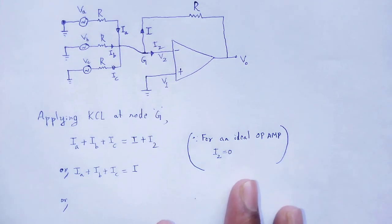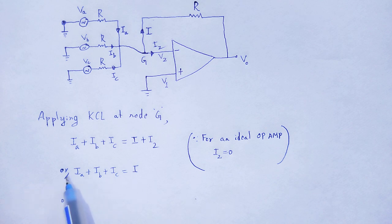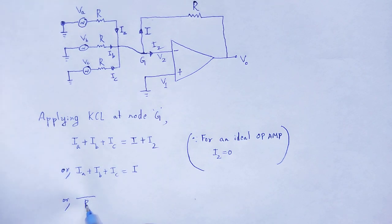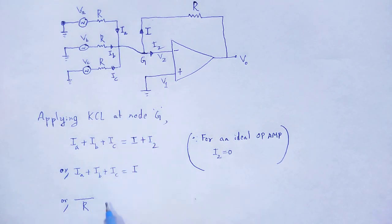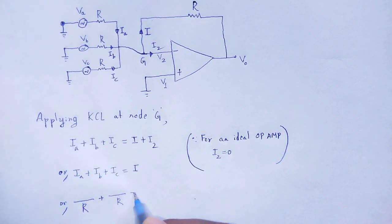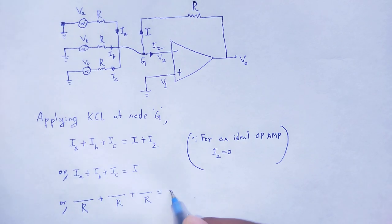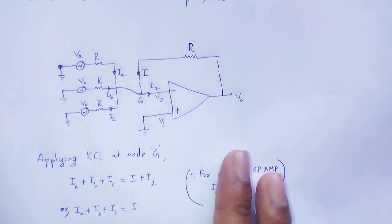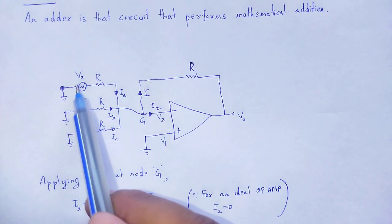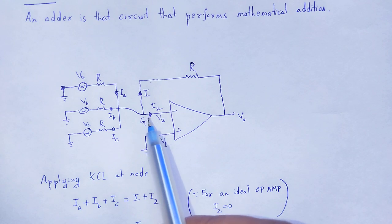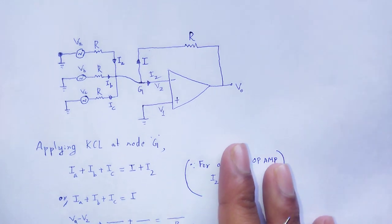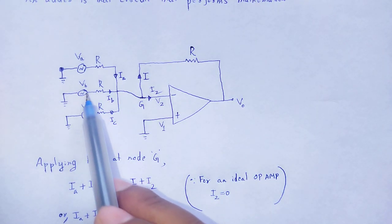Here we can use Ohm's law. According to Ohm's law, current equals potential difference divided by resistance. The resistance for I-A is R. The potential difference for current I-A is from source V-A to V2, that is V-A minus V2. Similarly for I-B, it is V-B minus V2 divided by R.